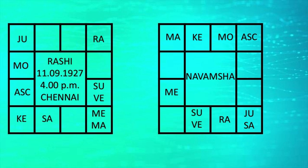Now let us see the 11th house. The 11th house is aspected by Jupiter. The 11th house signifies the house of gains. The 11th house lord Mars — lord of 11th house Scorpio — is aspected by Jupiter from its own house Pisces. Both the 11th house and the 11th house lord Mars are aspected by Jupiter.